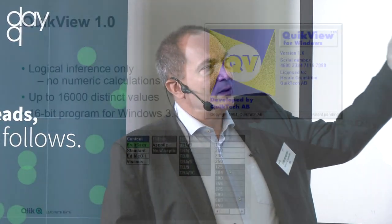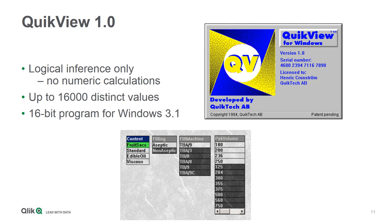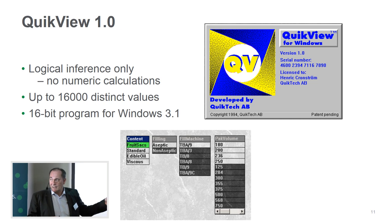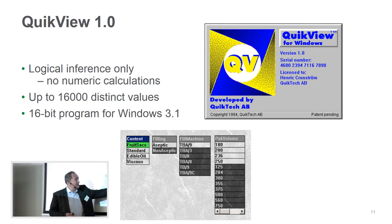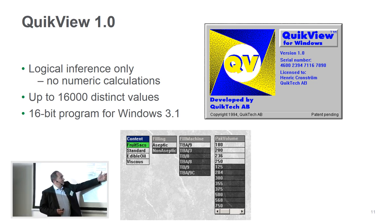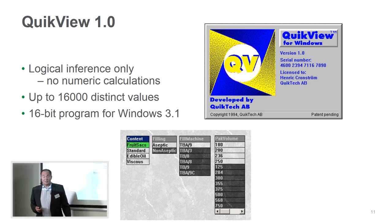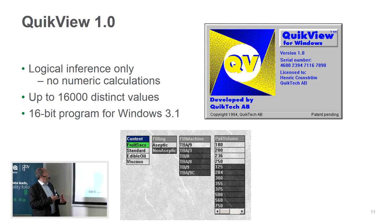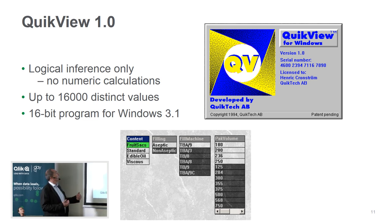This was a prototype — very, very nice. However, Tetra Pak didn't buy it; for some reason they didn't see the use of it. But we at QlikTech had seen that this could be generalized into something much much better. So we immediately took what we learned from this prototype and made it into a more general product — we made QuickView. The same selection looked like this in QuickView: you click on fruit juices and suddenly some values are excluded and others are implied. You can see that TBA9 is the only machine you can use. QuickView at the time only contained what we today call the logical inference — the color coding — with no numeric calculations whatsoever, and we could only load 16,000 distinct values.